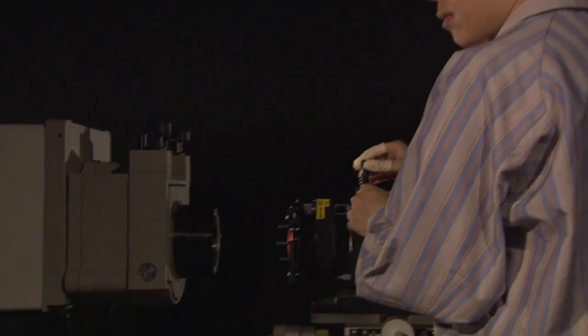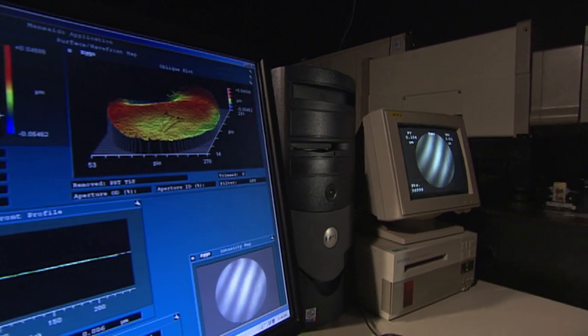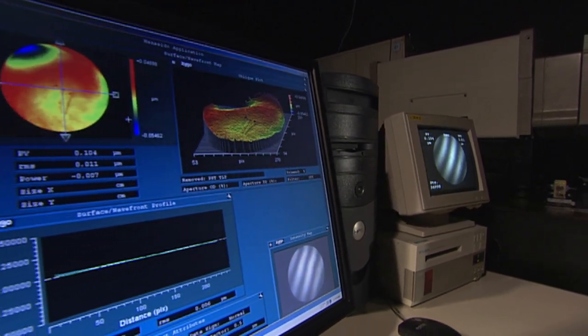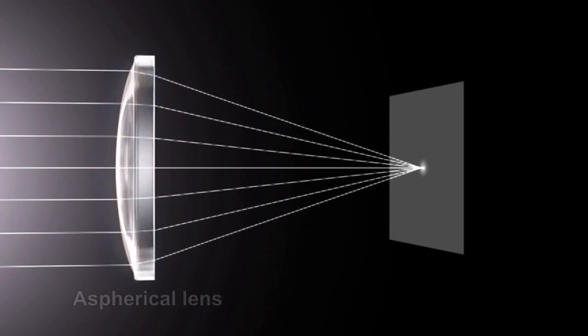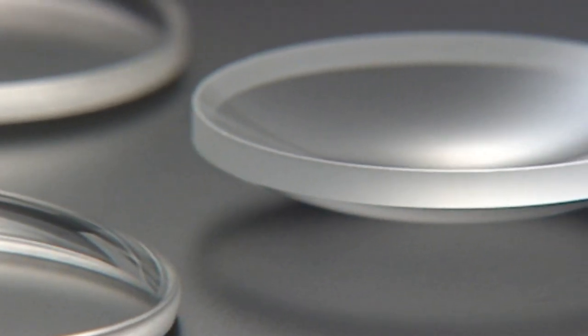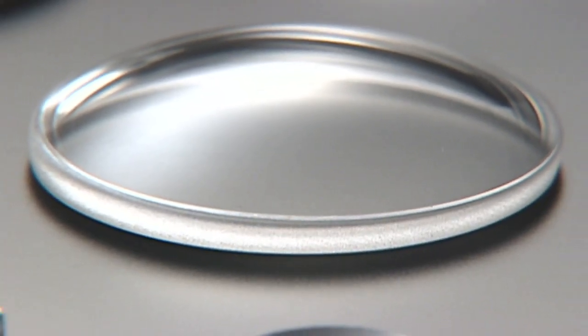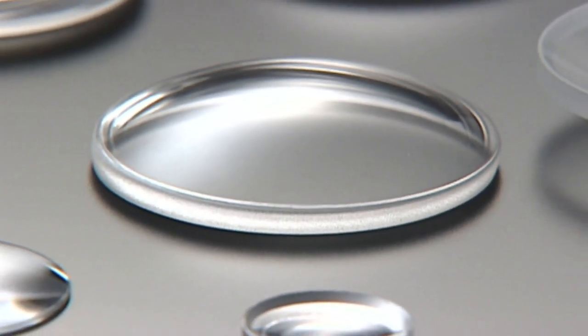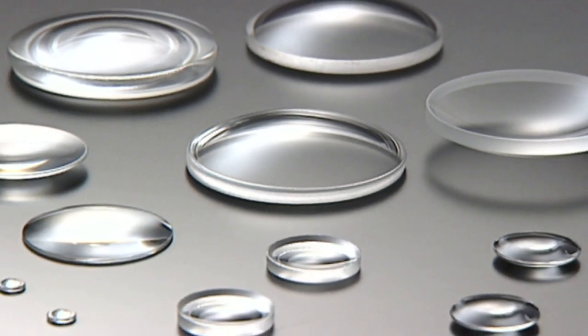Canon has found a revolutionary way to solve the problem of spherical aberration. The solution is an aspherical lens, which is not affected by aberrations on the lens surface. Canon succeeded in the very difficult task of designing and producing aspherical lenses, and in the process, increased quality while reducing the number of lenses needed. Aspherical lenses also contribute to the correction of distortion.